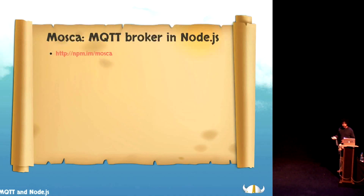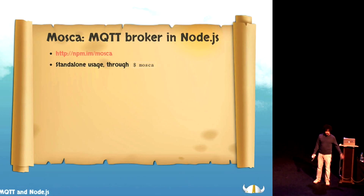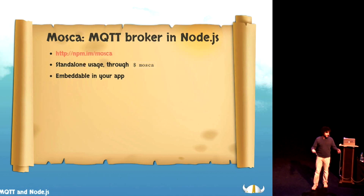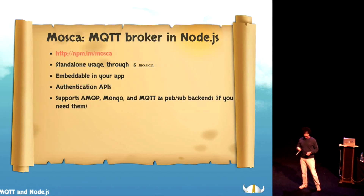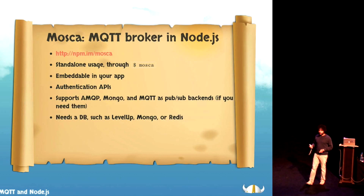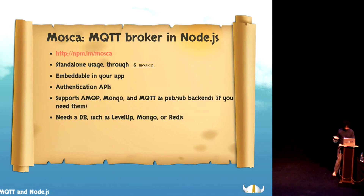It's based on unreleased code, so take it with a grain of salt. What I've done is this broker called Mosca, which just means 'fly' in Italian. It can be used standalone — which is what I'm using for these demos — but it can also be embedded in your app, like with LevelUp, LevelDB. You can build your own broker and add your own functionality to it for making scalable Internet of Things applications. It has some authentication API. It can be plugged on top of any known pub/sub system. To support the offline mode, we need also a database — I'm one of the LevelUp committers because I started using LevelUp for this.